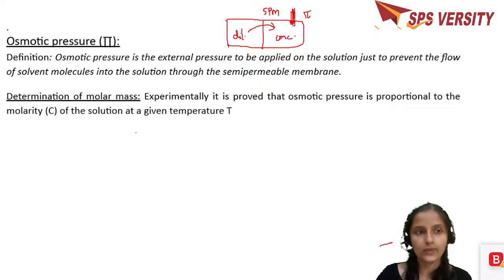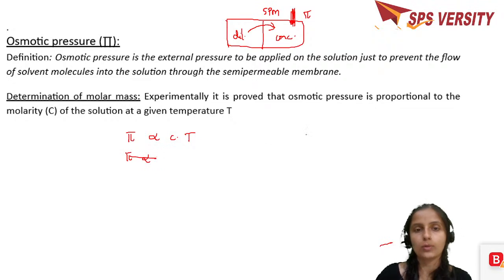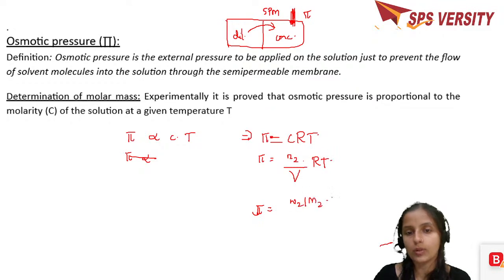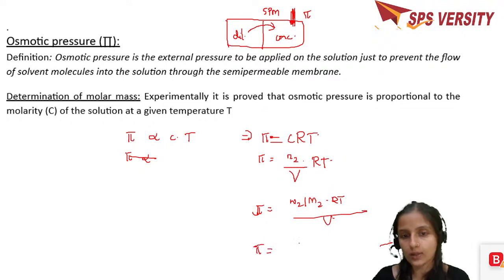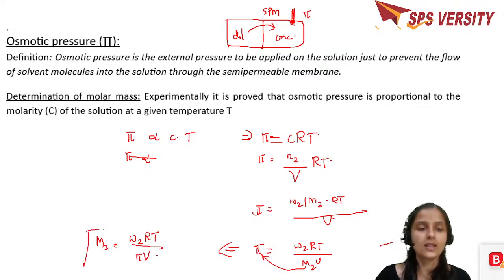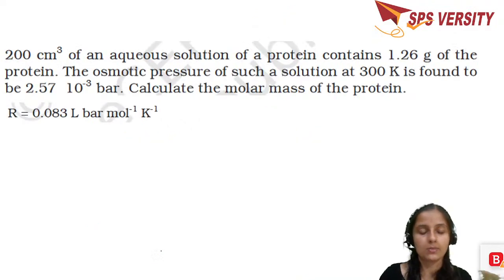Osmotic pressure (pi) is directly proportional to temperature at a given concentration. To remove the proportionality symbol, we add the gas constant R: pi = CRT, where C is the concentration in molarity (moles of solute / volume of solution in liters). Substituting C = n2/V = w2/(M2·V): pi = w2RT/(M2·V). Rearranging to find molar mass: M2 = w2RT/(pi·V).